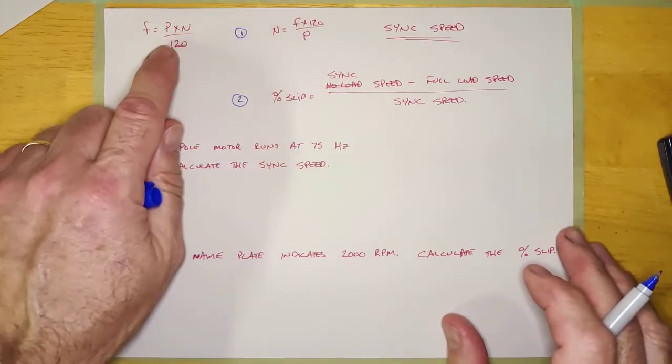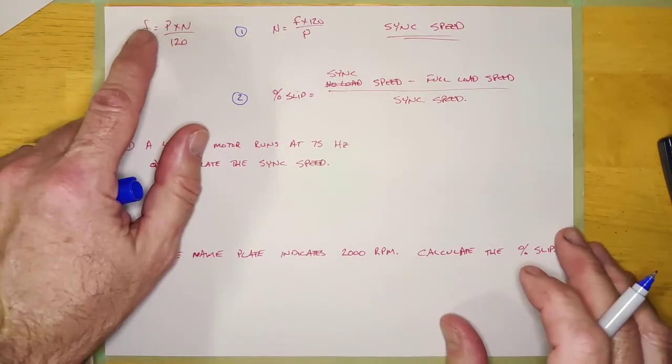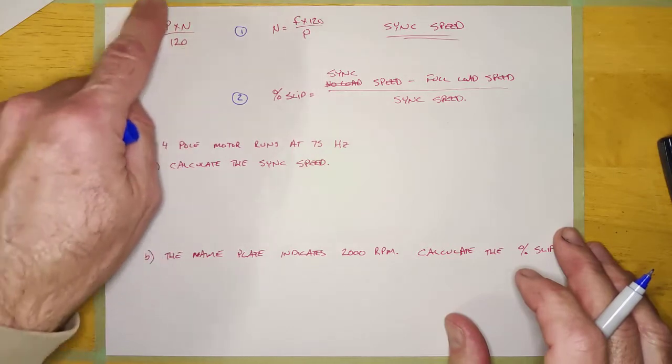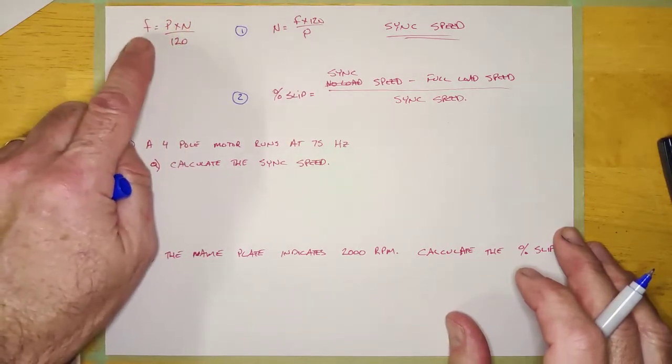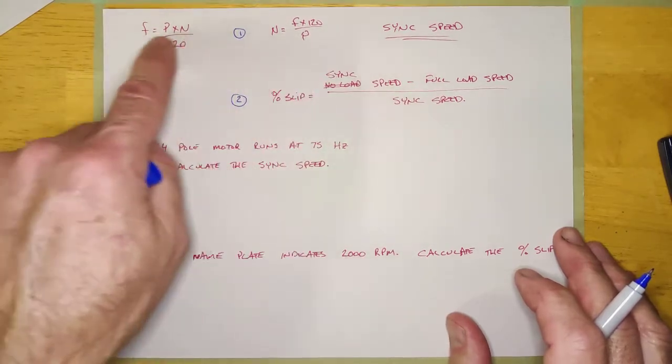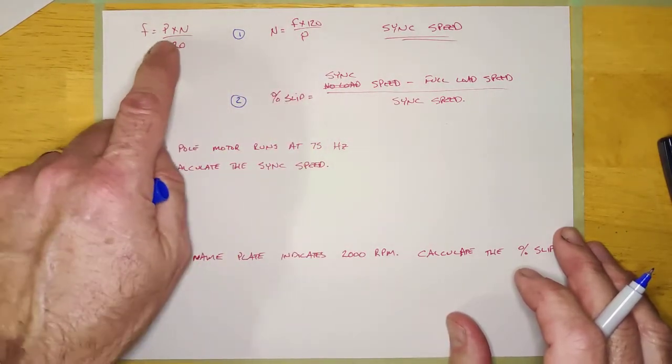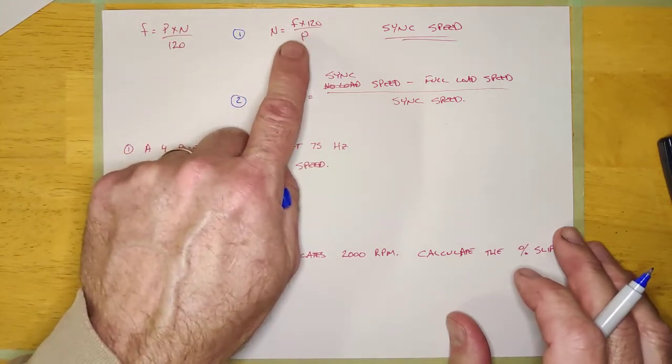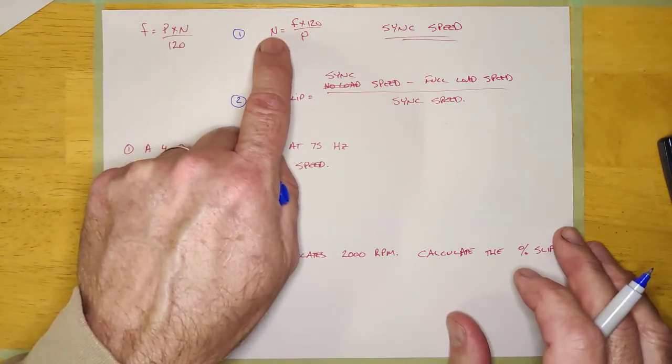And it comes from this formula right here, or at least this formula here is the same. This is f is equal to p times n over 120. This one usually is used to calculate what's the frequency output of an alternator if you know how many poles it has and how fast it's turning. So these two are the same formulas. This one usually refers to alternators. This one here refers to motors, and this one you're usually calculating speed.